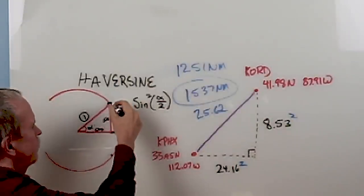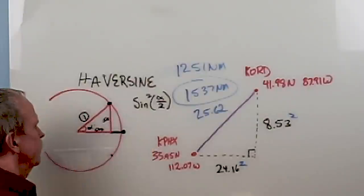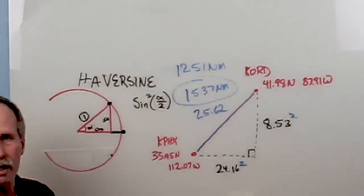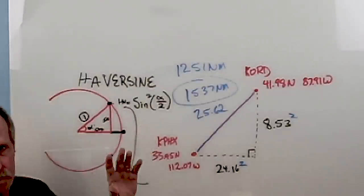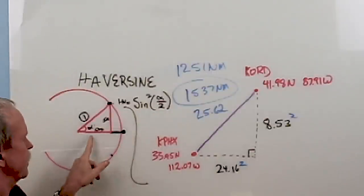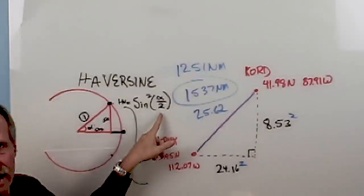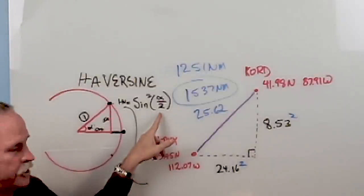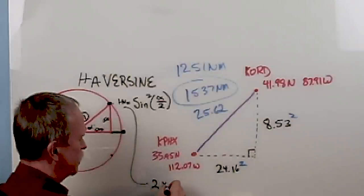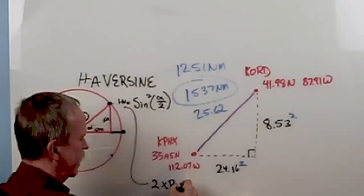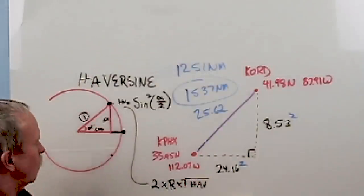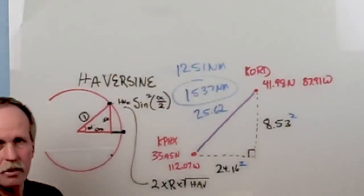If we had an airport up here and we wanted to go to an airport here, it would be a rather simple matter of just multiplying angle alpha by 60. Now, the thing about the haversine is that you're measuring the haversine of half the angle, half this angle alpha. So once we have that, we have to multiply it by two. So here's how you find the distance. You take two times the radius of the sphere times the square root of the haversine.